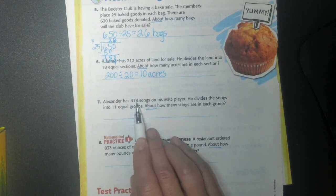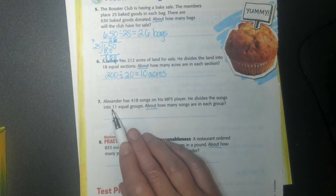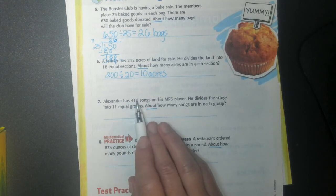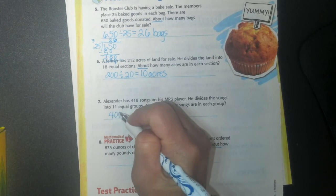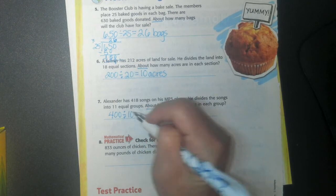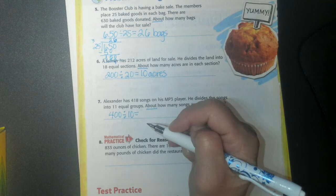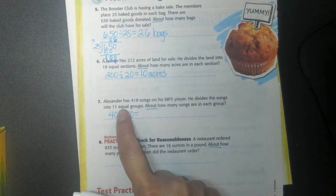Alright. So here's Alexander. He has 418 songs on his MP3 player. He divides them up into 11 equal groups. But we're going to make this real easier. Instead of 418 songs, let's have 400 songs. And instead of dividing it into 11 groups, I'm going to put them into 10 groups.